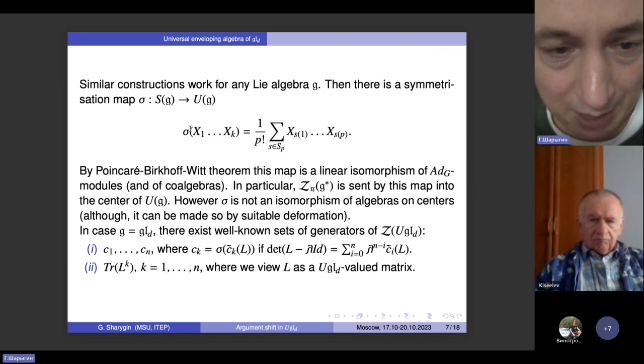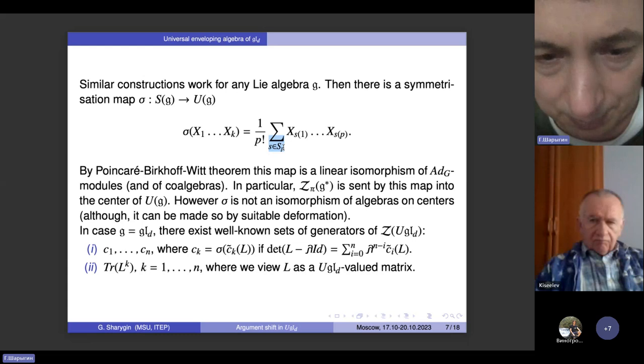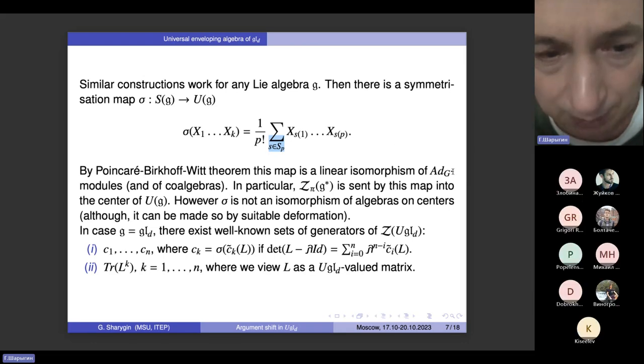As I already mentioned, the symmetric algebra of Lie algebra GLD, and more generally of any Lie algebra G, is closely related to the universal enveloping algebra of that Lie algebra. Namely, there is a map, sigma, the symmetrization map, which sends monomials of this form to the sums of elements in universal enveloping algebra. Sum is taken over all elements in the symmetric group. And by the Poincaré-Birkhoff-Witt theorem, this map is a linear isomorphism of G modules, not of algebras.